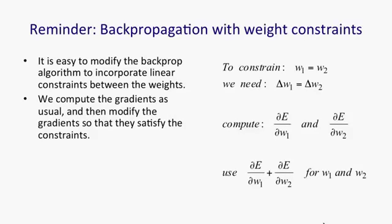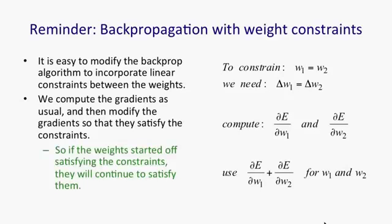So if we want W1 to equal W2, we start off with them equal, and then we need to make sure that the change in W1 is equal to the change in W2. And we do that by simply taking the derivative of the error with respect to W1, the derivative with respect to W2, and adding or averaging them, and then applying the same quantity for updating both W1 and W2. So if the weights started off satisfying the constraints, they'll continue to satisfy the constraints.